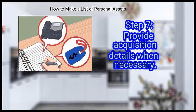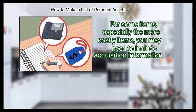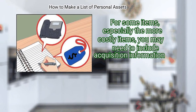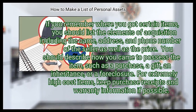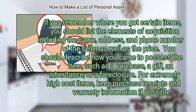Step 7: Provide acquisition details when necessary. For some items, especially the more costly items, you may need to include acquisition information. If you remember where you got certain items, you should list the elements of acquisition including the name, address, and phone number of the seller as well as the price. You should describe how you came to possess the item, such as a purchase, a gift, an inheritance, or a foreclosure, for extremely high-cost items. Keep purchase receipts and warranty information if possible.